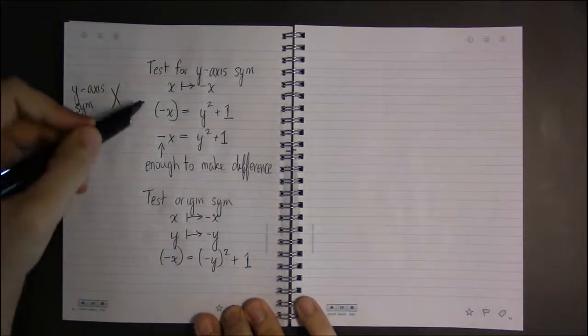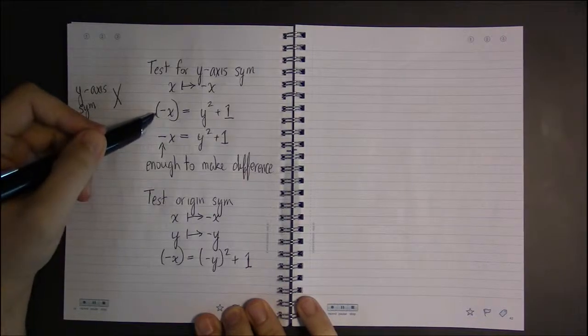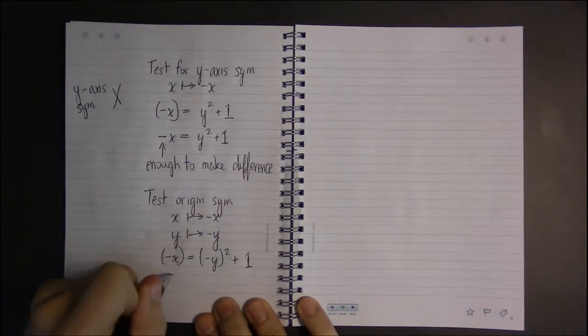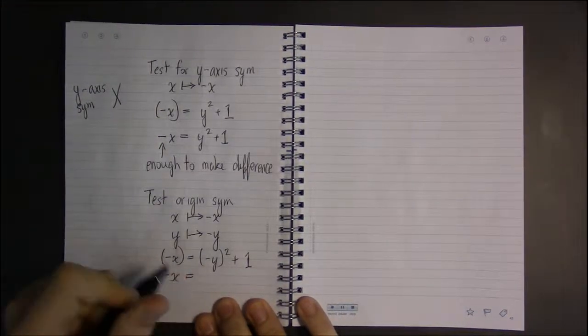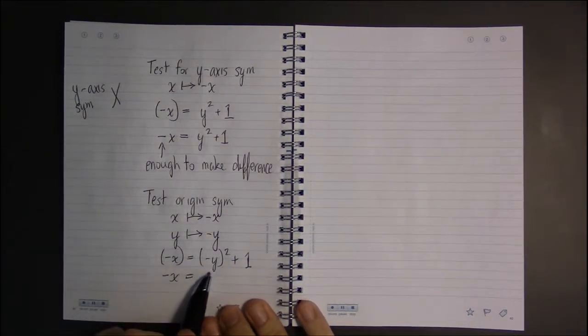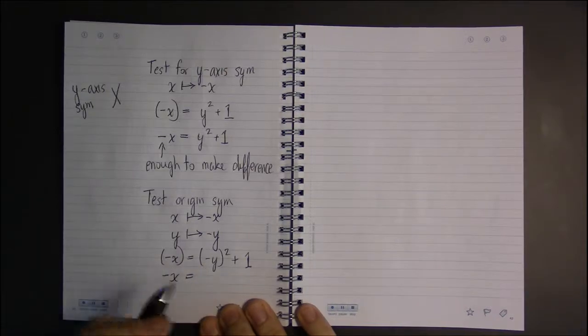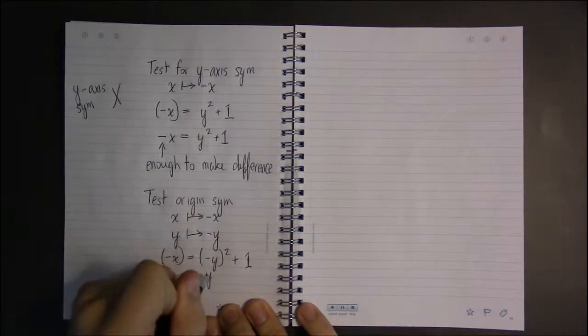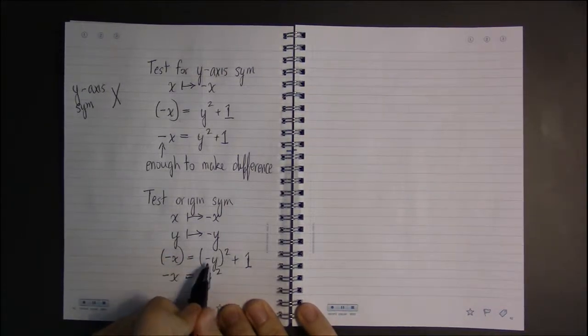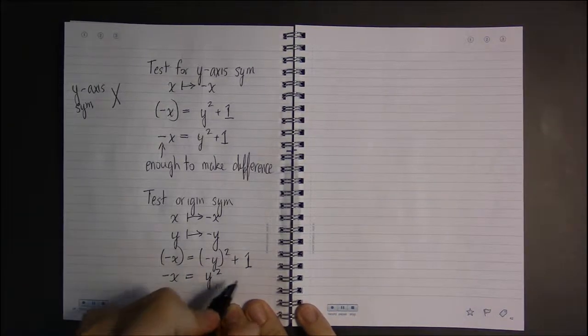Just like before, I can drop the parentheses on the left, and squaring minus y just leaves us with y squared. Squaring doesn't care about negatives.